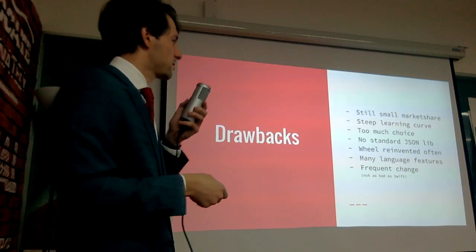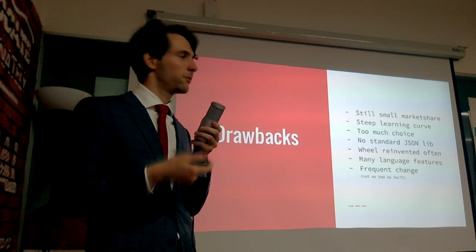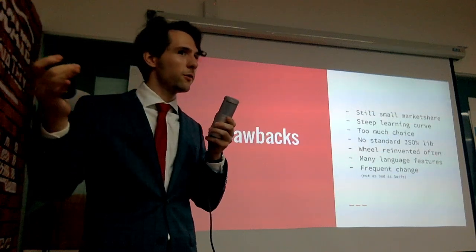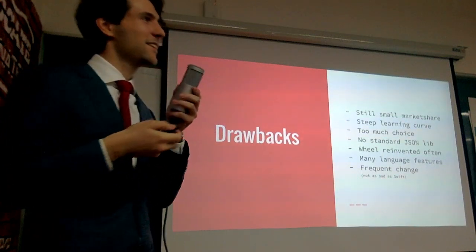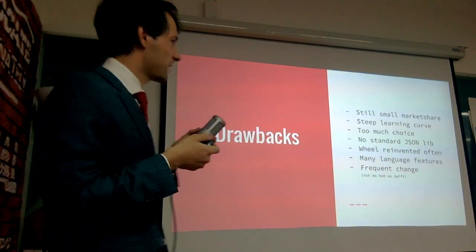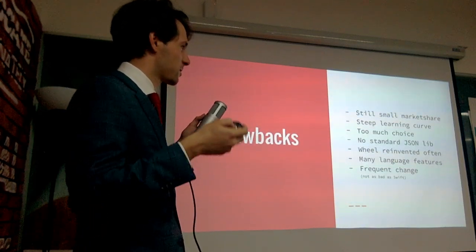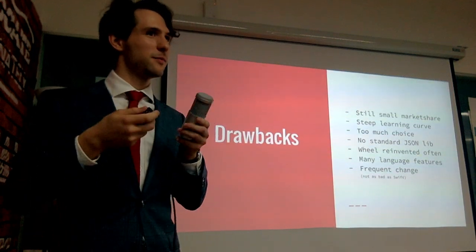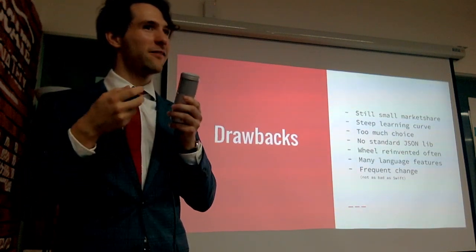There are so many language features. The complaint I had from many people I worked with was: I have this feature available, I have that feature — how do I combine them all, or do I use them? I've seen people take Scala's implicits to the extreme, for example taking an implicit Boolean as an argument to a function call — that's something people can easily abuse and then feel the pain of having made the wrong decision. It's very powerful, but it's not going to stop you from making mistakes.